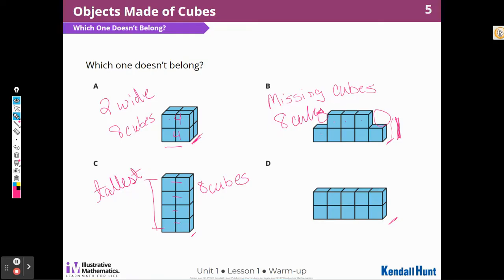When I look at D, it's two tall and one wide. This one's two tall and this one's two tall. But this one has one, two, three, four, five, and six, seven, eight, nine, ten. It is the only one that's made of ten cubes.